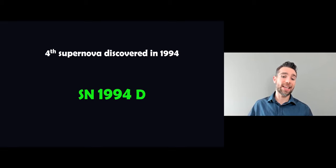Now this one here, SN 1994D, means that it was the fourth supernova discovered in that particular year. So quite easy, straightforward to figure out that particular one.